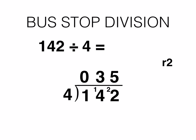We now need to work out how to find the answer and write it as a decimal fraction. Put a decimal point after the 2 and write a 0 in the tenths column as a placeholder. Carry across the remainder of 2 and write it next to the 0 in the tenths column. Then calculate how many 4's divide into 20, which is of course 5.